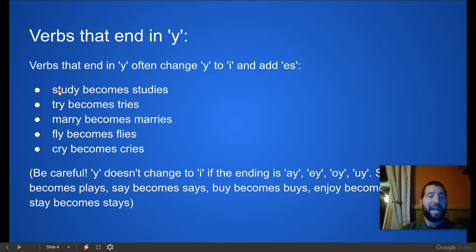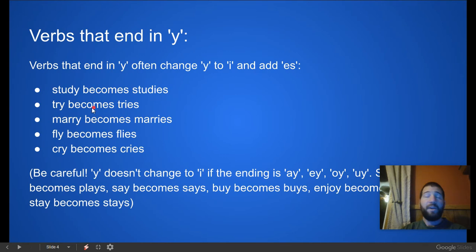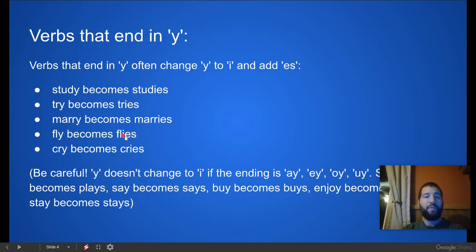If the verb ends in Y and we're adding an S onto it, we change the Y to an I and add E-S. For example, 'study' becomes 'studies' — we change the Y to an I and add E-S. 'Try' becomes 'tries,' 'marry' becomes 'marries,' 'fly' becomes 'flies,' and 'cry' becomes 'cries.' In all of these, the Y changes to an I and we add E-S.